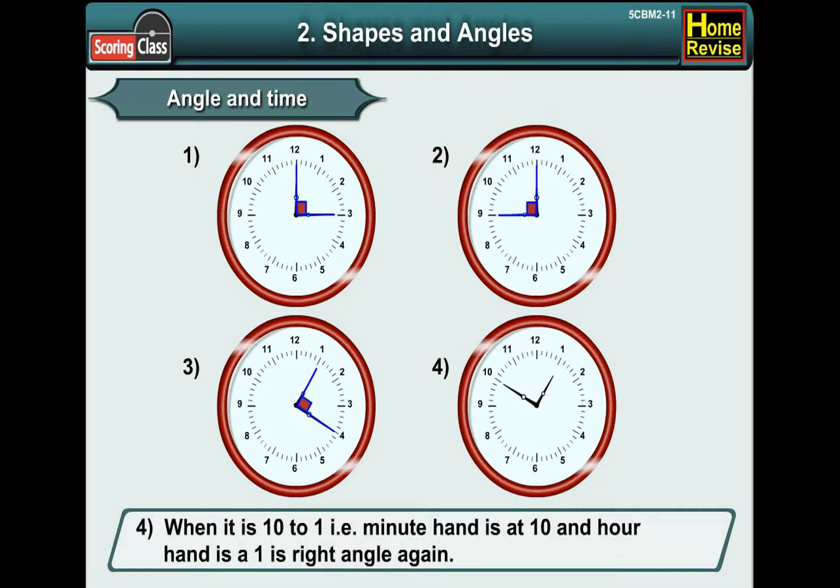Number 4. When it is 10 to 1, that is, minute hand is at 10 and hour hand is at 1. Well, the hands of the clock are making a right angle again. Alright.